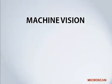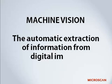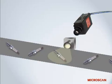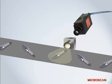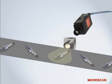Let's get started with a definition of machine vision. Machine vision is defined as the automatic extraction of information from digital images. Let's look at a very basic breakdown of a typical machine vision process.